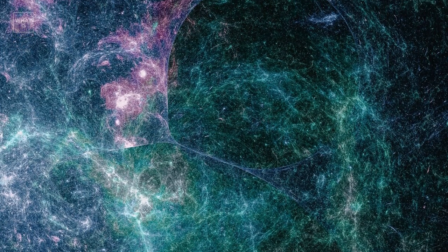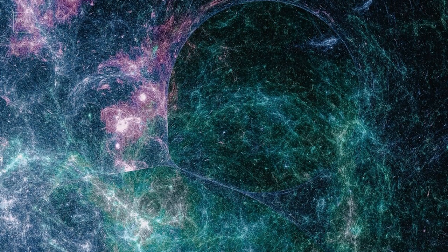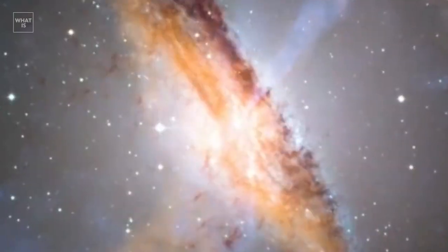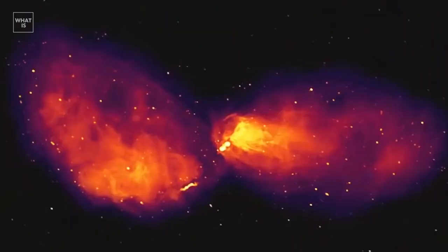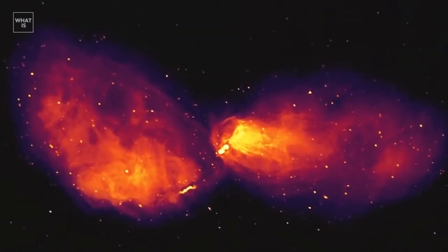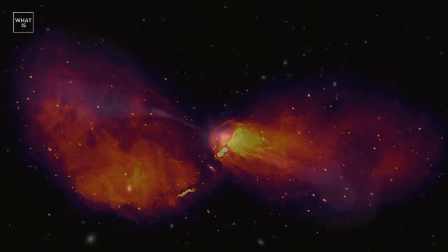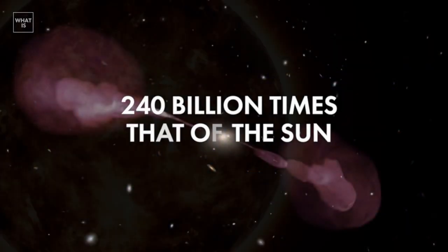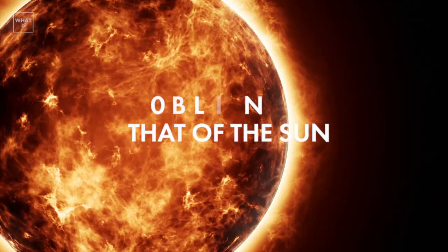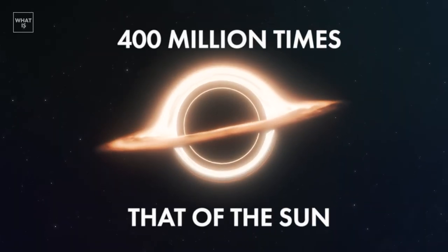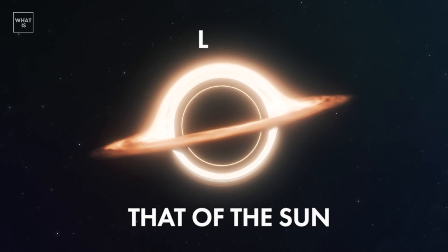But even these, insignificant by cosmic standards, threads are amazing. Alcyonisus is a fairly ordinary elliptical galaxy embedded in the thread of the cosmic web. Its mass is about 240 billion times that of the Sun, and the mass of the black hole at its center is 400 million times that of the Sun.